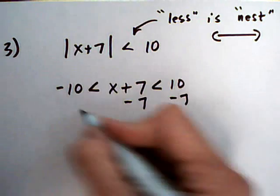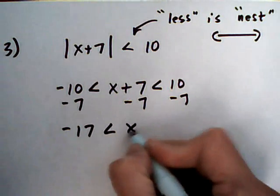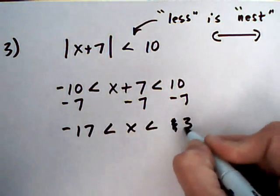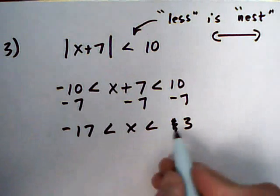Take away 7, take away 7, take away 7. Minus 17, x, and 3. So x is greater than minus 17, less than 3.